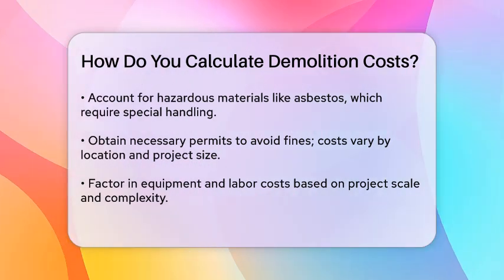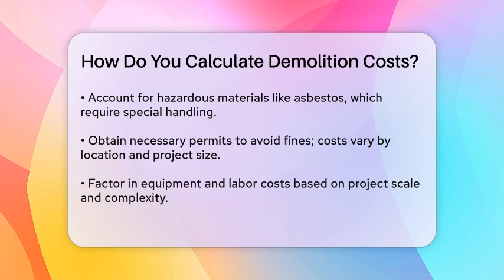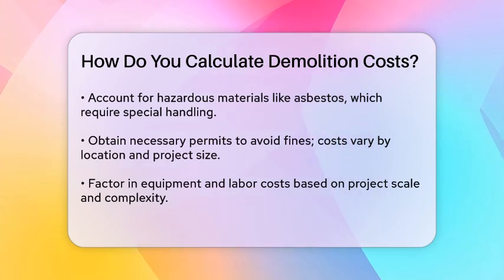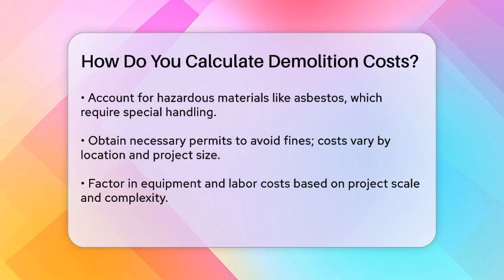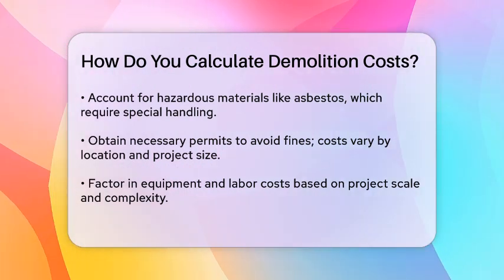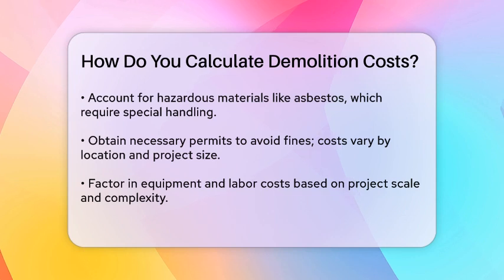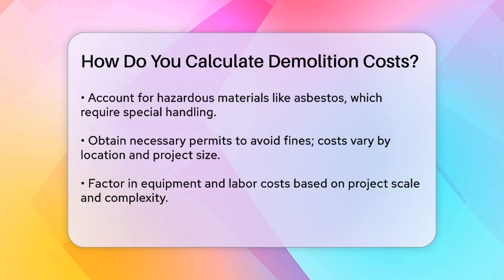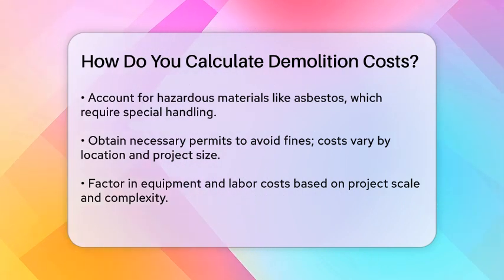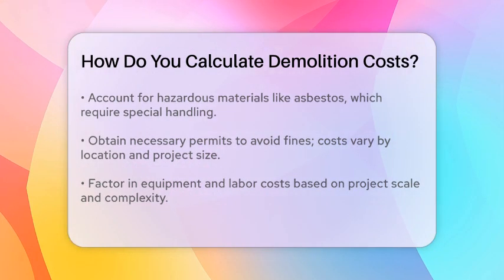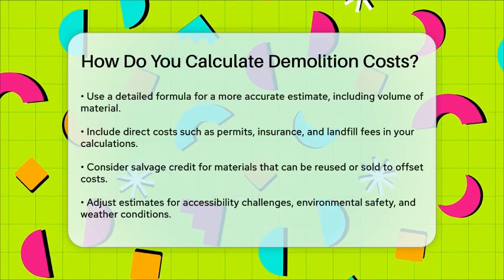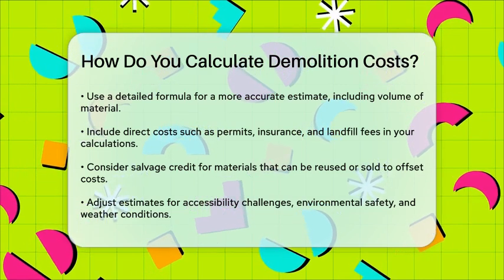To get a more detailed estimate, you can use a formula that includes several components. Volume of material: calculate the volume of material to be demolished and removed from the site. Rate of production: this is based on your organization's past experience with similar projects. Cost of production: this includes current costs for labor, equipment, and disposal. Direct costs: these include permits, insurance, travel costs, landfill fees, utilities disconnections, site grading, security, and environmental requirements. Salvage credit: this is the estimated market value of salvage and scrap items that can offset the total cost.